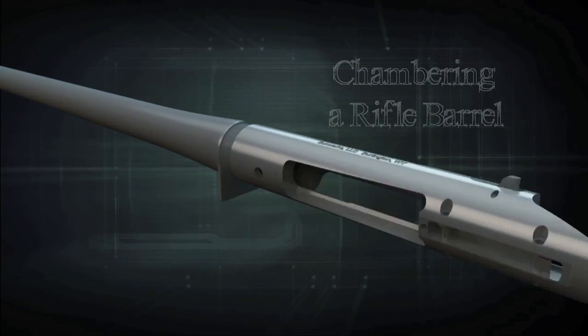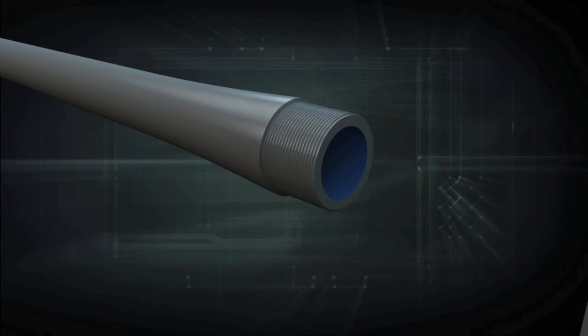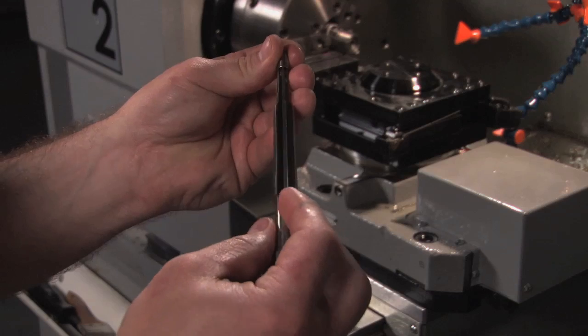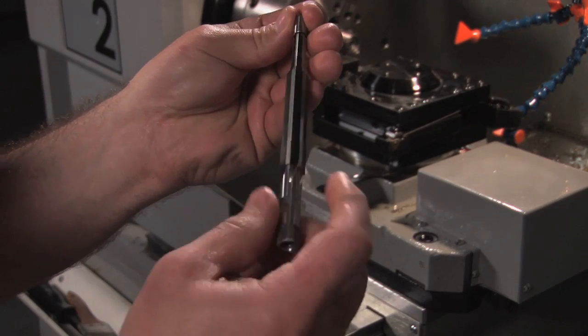The chamber of a rifle accepts the entire cartridge and is located inside the barrel. A special tool called a reamer is used to cut the exact dimensions of the chamber in the barrel.